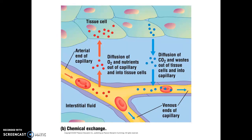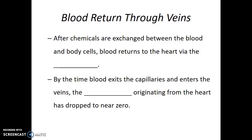Here we see diffusion of oxygen and nutrients out of the blood towards the tissue cells that are performing cellular respiration. At the same time, carbon dioxide and waste products from those respiring cells are able to diffuse into the bloodstream. Remember, diffusion happens without any extra energy being required — it's just the process of the movement of liquids and gases in a solution. After chemicals are exchanged between the blood and body cells, blood returns to the heart via the veins.